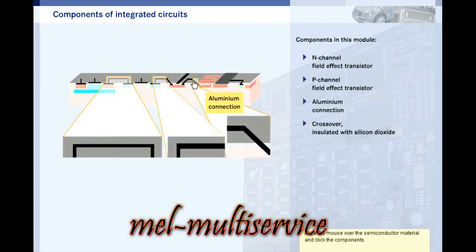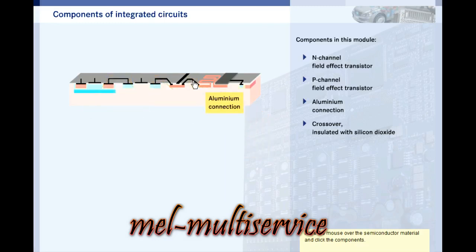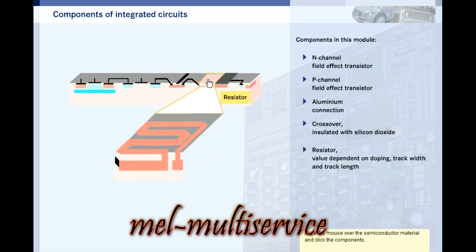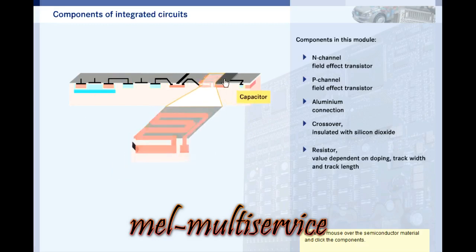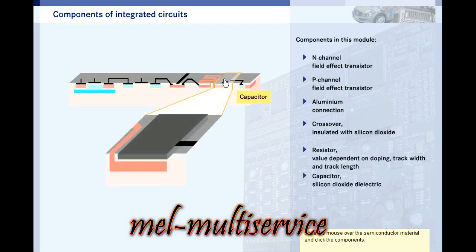Connections are manufactured using the process of aluminium vapour deposition. Resistors are P-type regions in an N-type semiconductor; the doping and size of the resistor track determine the resistance. Capacitors are two conducting paths on top of each other — the top one is made of aluminium and the bottom one is a P-type semiconductor, separated by an insulating layer of silicon dioxide.